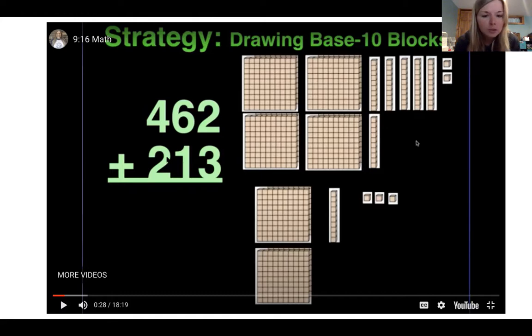Then we move on to 213. Well, my two is in the hundreds place so I am going to have two 100 pieces. Moving over, we have one in the tens place, so one 10 piece, and our three in the ones place. One, two, three ones. That makes up 213.